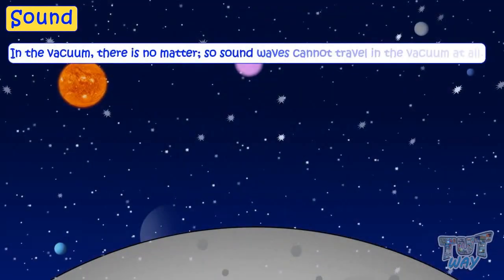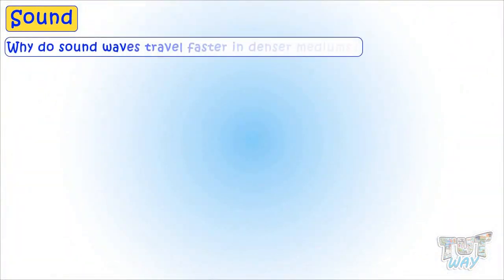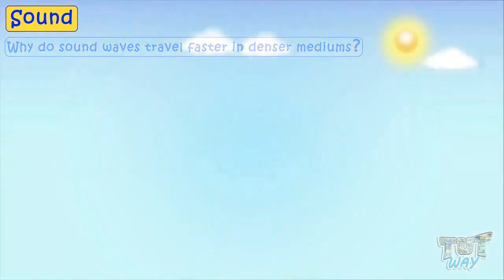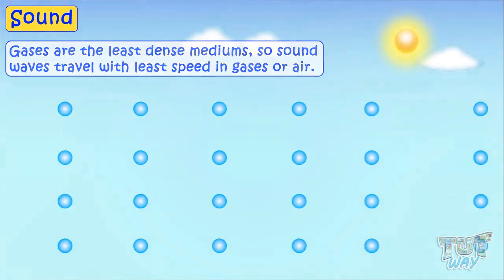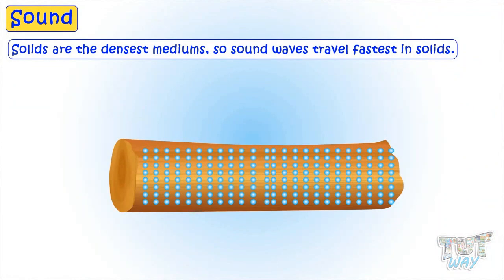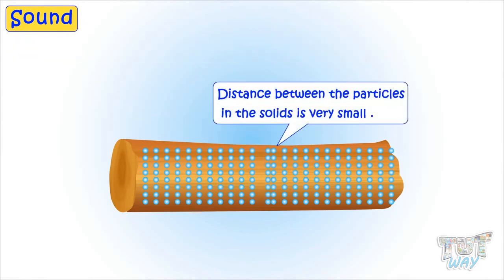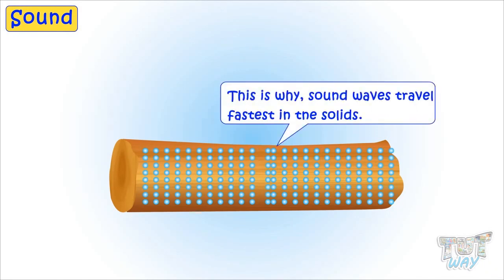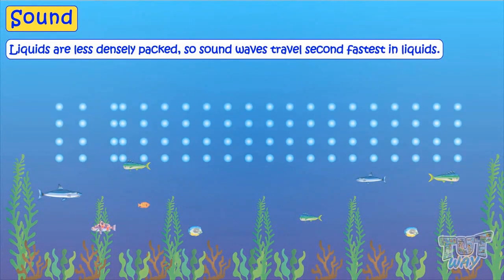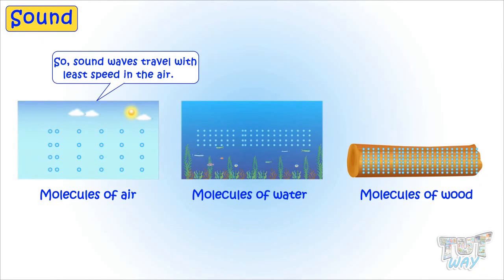In a vacuum, there is no matter, so sound waves cannot travel at all. Gases or air is the least dense medium, so sound travels with the least speed in air. Solids are the densest mediums, so sound waves travel fastest in solids — because the distance between particles in solids is very small, particles can pass the vibration to the next particle very quickly. Liquids are less densely packed, so sound travels second fastest in liquids. Air is the least dense medium, so sound waves travel with the least speed in air or any gas.